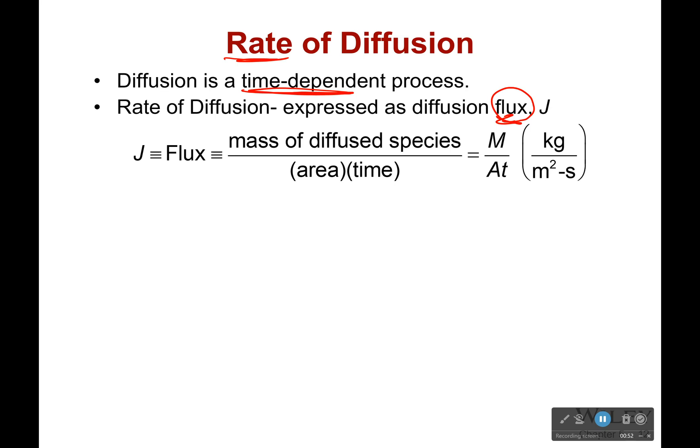In this case, we're going to have diffusion flux, or the mass of the diffused species, over a particular area it's passing through, over time. So mass, area, time.